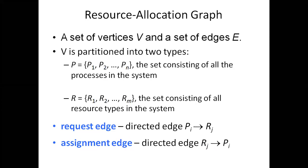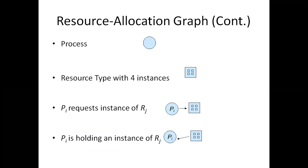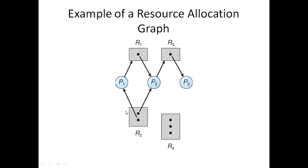In a resource allocation graph we have vertices and edges. Processes are represented with circles and resources with rectangles, with dots showing instances. This is a request edge and this is an assignment edge. Using a resource allocation graph you can easily identify whether there is a deadlock present in a particular system or not.